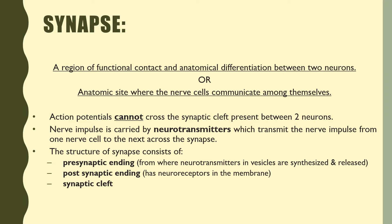The synapse is defined as a region of functional contact and anatomical differentiation between two neurons, or the anatomic site where nerve cells communicate among themselves. The action potential generated in one neuron cannot cross to the second neuron — it will end up in the neuron in which it was generated.